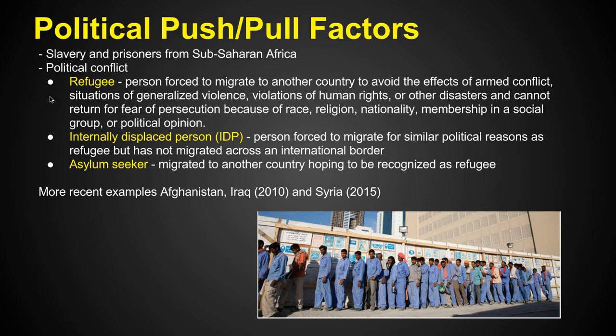An internally displaced person (IDP) is someone who is forced to migrate for similar political reasons as a refugee, but has not migrated across an international border — they stay within their own country, though forced out of their region. An asylum seeker is someone who has migrated to another country hoping to be recognized as a refugee, but doesn't yet have that status. We think most recently of refugees from Afghanistan and Iraq around 2010, and more commonly of Syria, where wars and terrorism have forced people out.